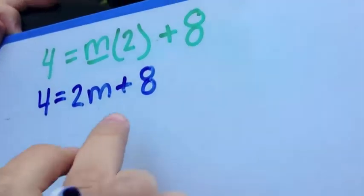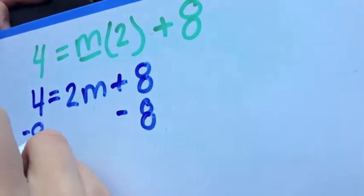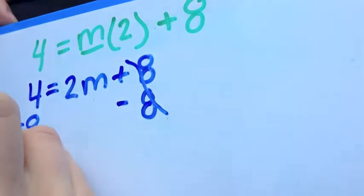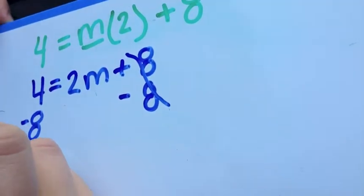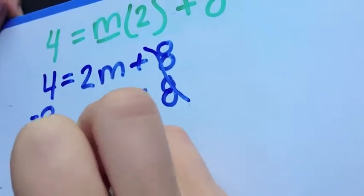Now you have to do the same thing you did on the other one. You have to put a negative 8 here and a negative 8 here. You get rid of this 8. What's 4 minus 8? Negative 4.